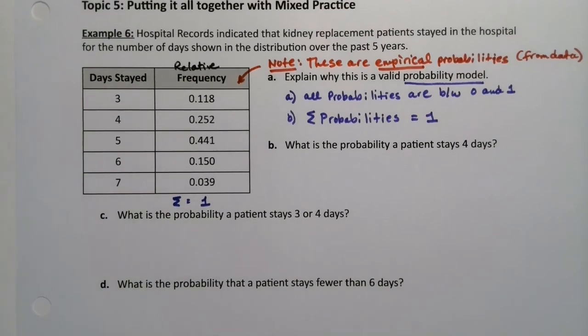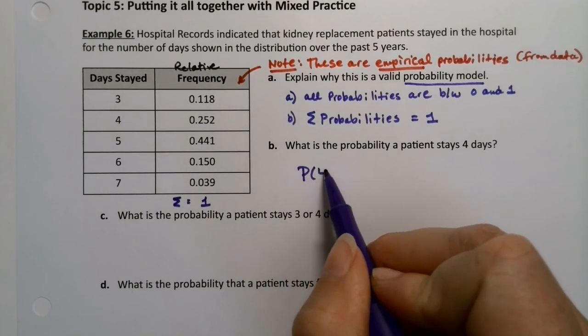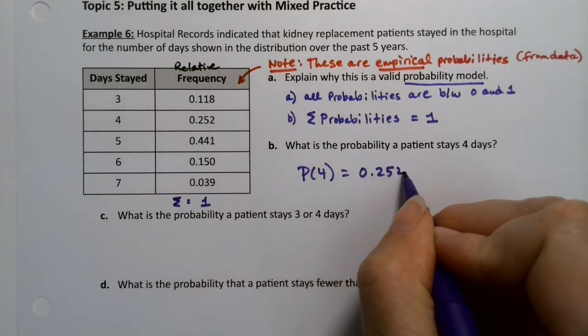What is the probability a patient stays 4 days? Well, that's easy enough. The probability of 4 is 0.252.